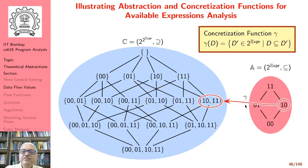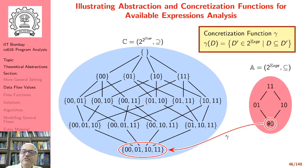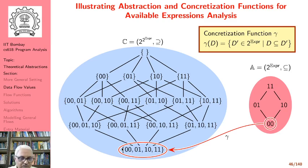The concretization of 10 is {10, 11} — when we say 10, it could represent states where the first expression is available along some paths and all expressions are available along others. The concretization of 00 gives all possible states: both expressions available along some paths, only the first along some, only the second along some, or no expression available along any path.